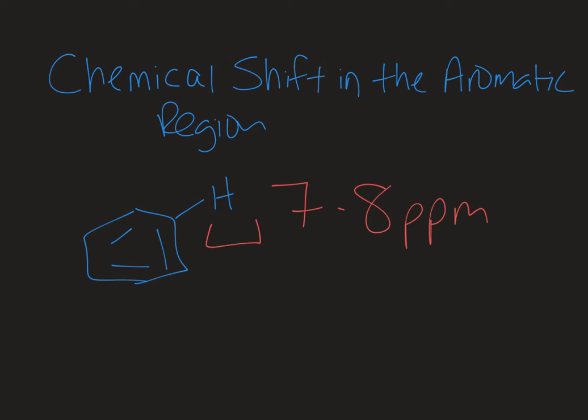Benzene itself is symmetrical, it has only one signal, and the chemical shift is about 7.3 ppm. But if there are substituents on the benzene ring — which of course there will be as we look at more complicated molecules — those will influence where within that region the signal shows up. So we want to learn some systematic ways that we can predict how chemical shift will be impacted by the presence of a substituent.